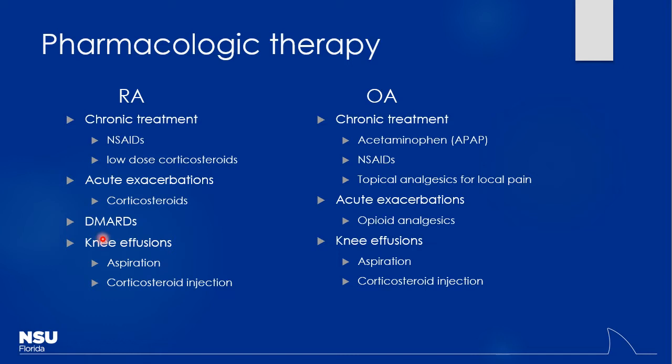The DMARDs — disease-modifying anti-rheumatic drugs — are going to play a big role for RA. You can also get knee effusions that can be addressed by aspiration, especially if there's a lot of fluid and pressure. Corticosteroid injection is also an option. Do kids get RA? Yeah — they have juvenile RA.